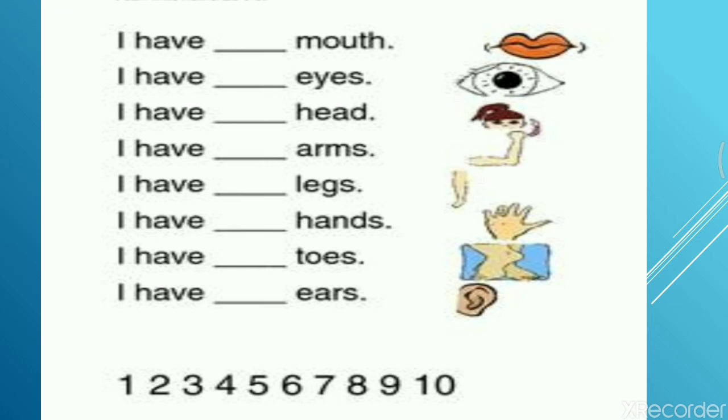Now, in this worksheet, you have to tell the number of different parts of the body. The object number. For example, how many eyes do you have? How many ears do you have? Now, see. I have dash mouth.